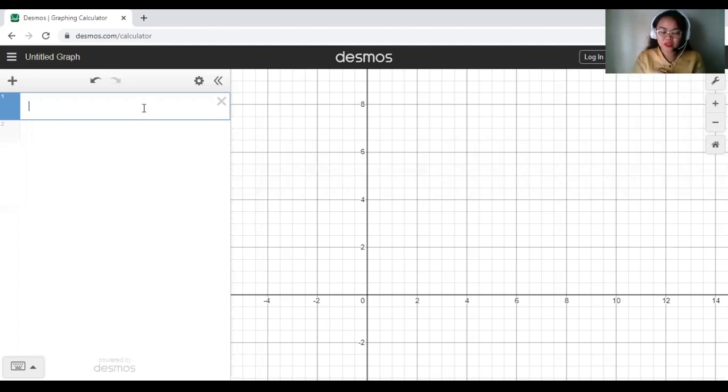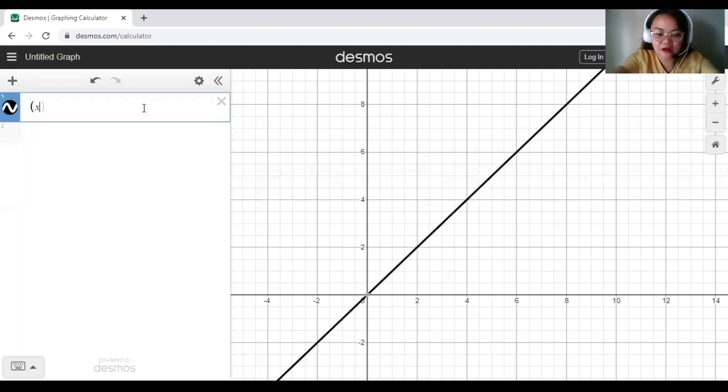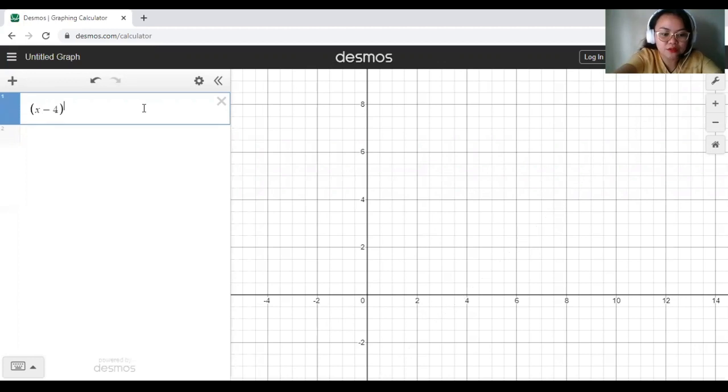First up is how to use Desmos in graphing circles. All you have to do is type the standard form of equation. Let's say our circle is (x - 4)² + (y - 3)² = 7. There is our circle.